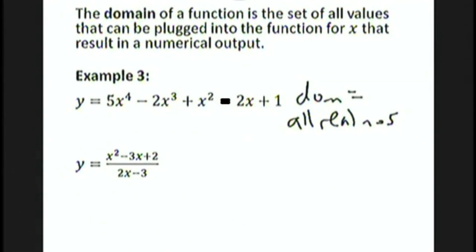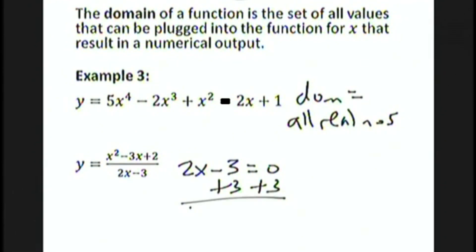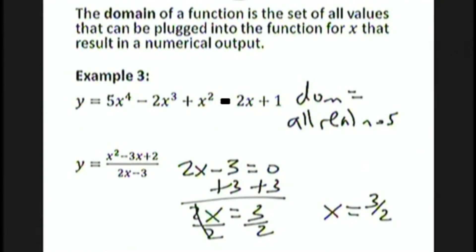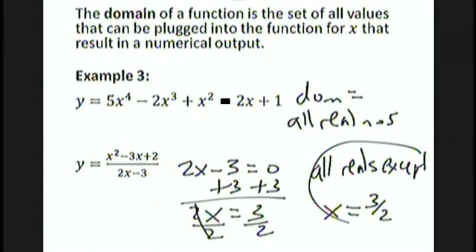Next let's look at a rational function that's not a polynomial: y equals x squared minus 3x plus 2 over 2x minus 3. The domain of a rational function is all real numbers except where the denominator is 0. To find the problem x values, we set the denominator equal to 0. Adding 3 gives 2x equal to 3, then dividing by 2 gives x equals 3 halves. So x equals 3 halves is the only x value not in the domain. The domain is all reals except x equals 3 halves.